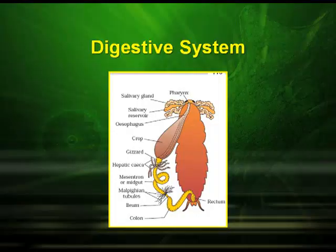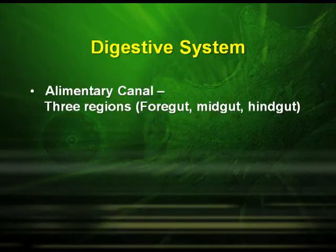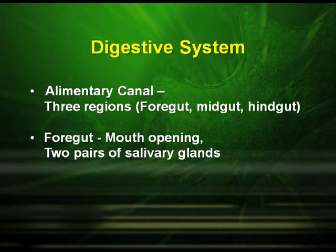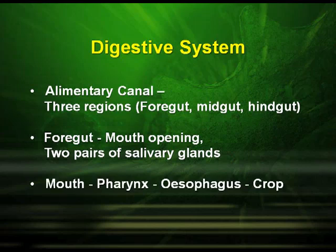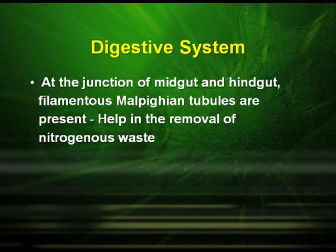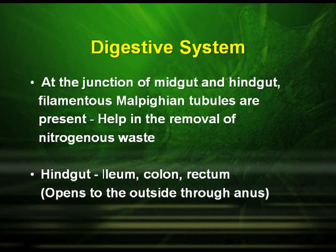Regarding the anatomy — the digestive system: the alimentary canal has three regions — foregut, midgut and hindgut. The foregut has the mouth opening with two pairs of salivary glands. The mouth leads to the pharynx, which leads to the esophagus and then to the crop. At the junction of midgut and hindgut, filamentous malpighian tubules are found, which help in the removal of nitrogenous waste. The hindgut includes organs like the ileum, the colon and the rectum, which opens to the outside by the anus.